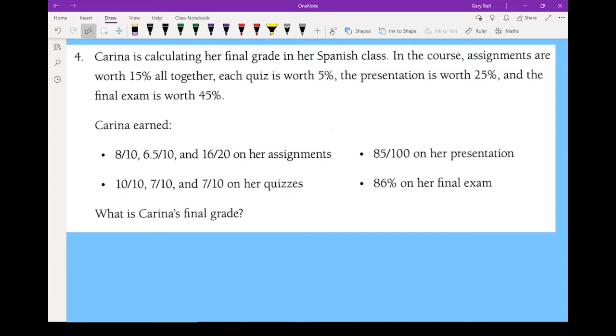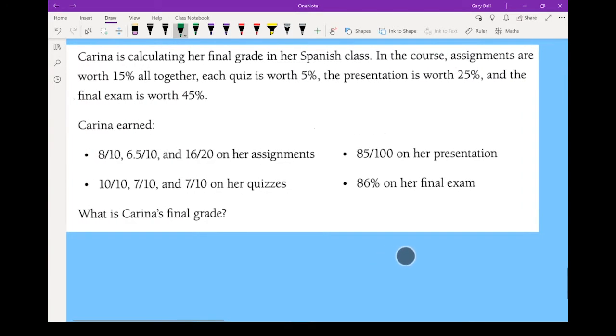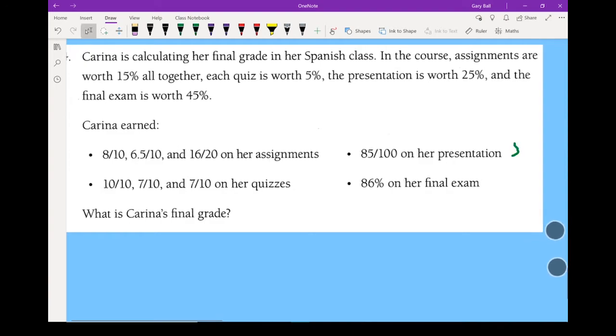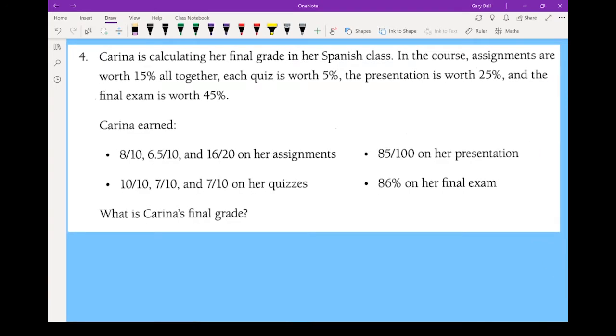Now to keep everything consistent, I'm going to convert all of those marks over into percents. So some of that's already easy to figure out and calculated. For example, her presentation, that's already 85%. Her final exam, that's already as a percent, 86%.